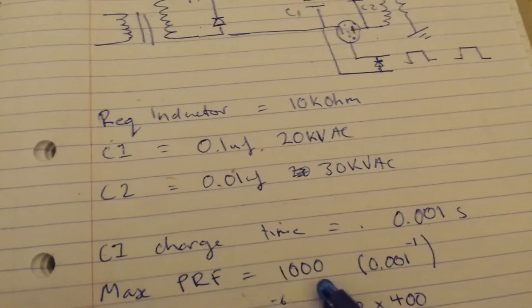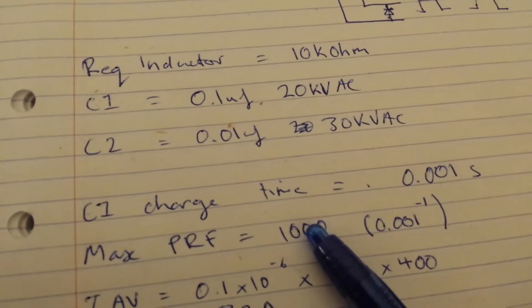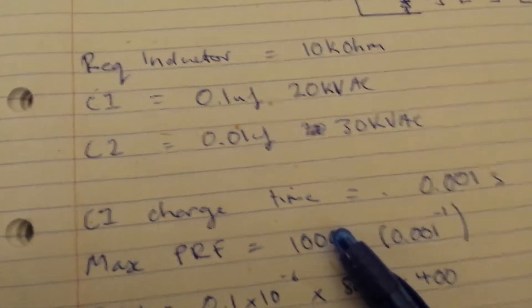That to the power of negative 1 gives us a max pulse repetition frequency of 1,000, because the discharge time is very quick compared to the charge time.